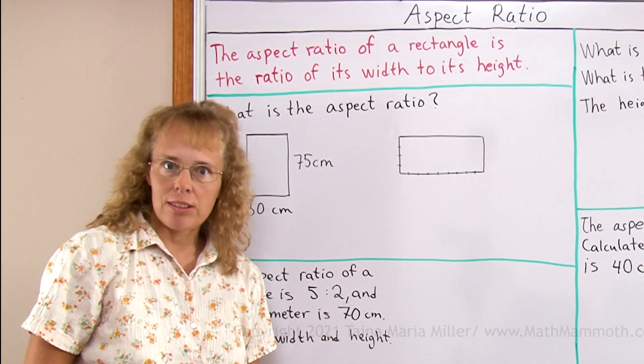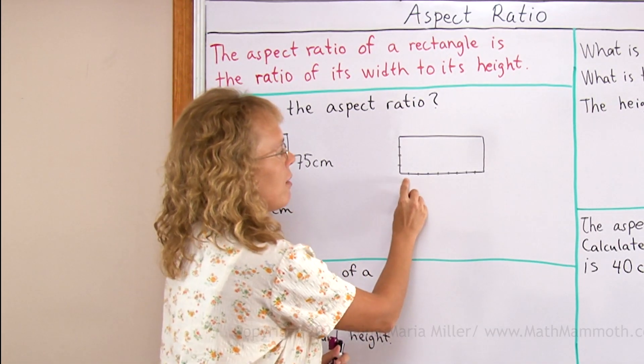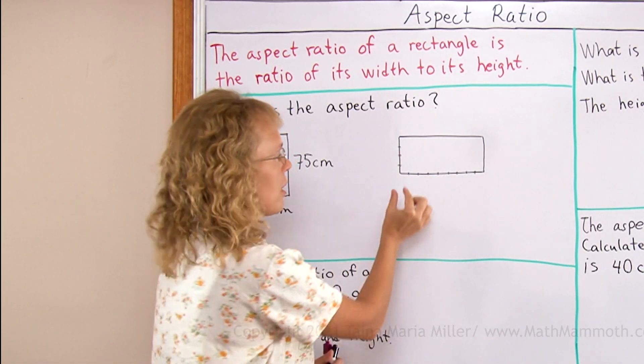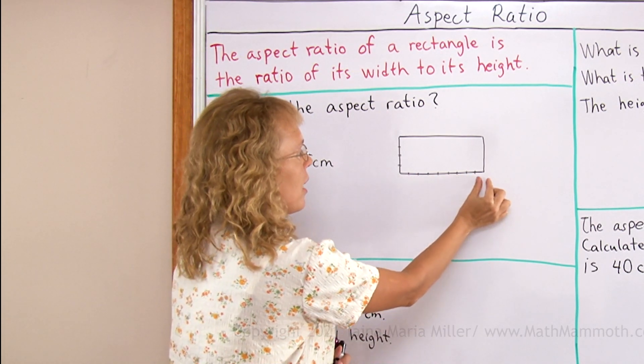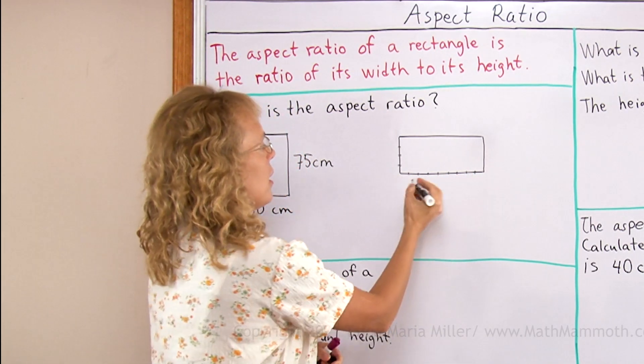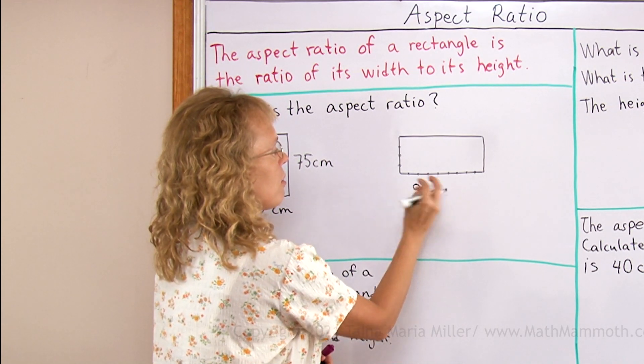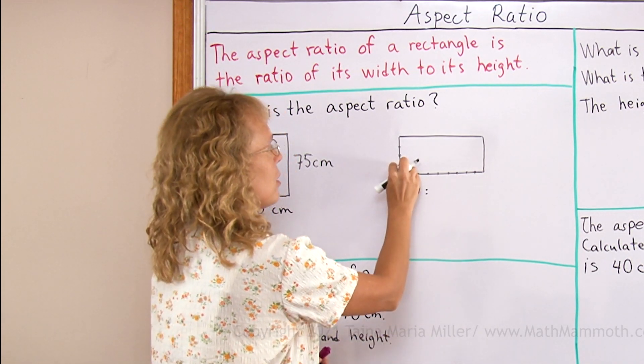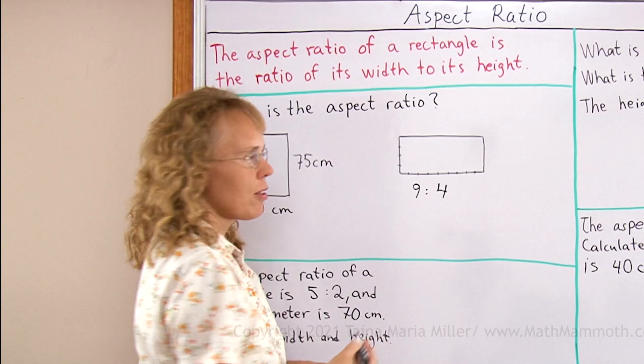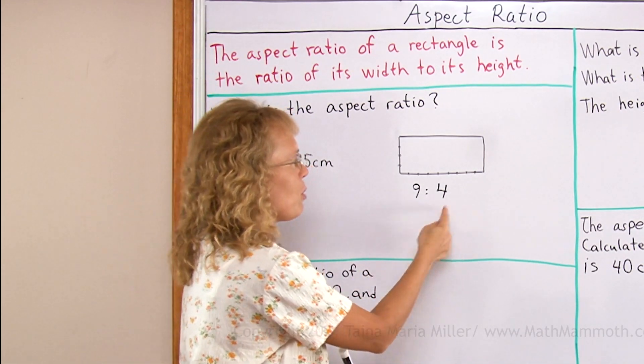So what is the aspect ratio of this rectangle? If you can see I have divided this into little parts and there's 1, 2, 3, 4, 5, 6, 7, 8, 9 parts this way. 9 parts for the width and then 1, 2, 3, 4 parts for the height. So the aspect ratio is simply 9 to 4.